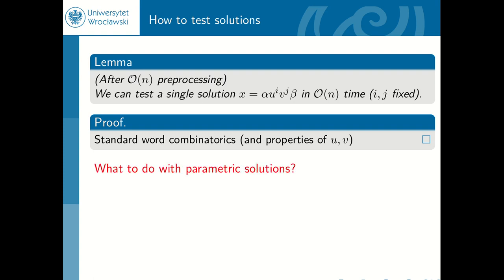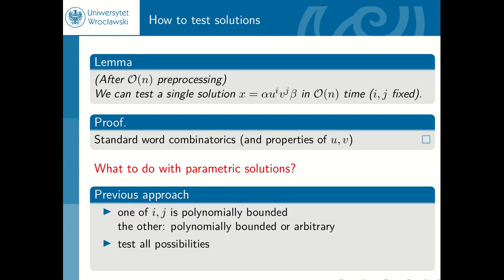Unfortunately, i and j are not fixed — there are arbitrary numbers — so we must handle those parametric solutions with unknown exponents. In previous combinatorial approaches, it was shown that one of i or j needs to be polynomially bounded, and then when one is fixed, either the other is also polynomially bounded or it works for every possible power. This gave a polynomial number of candidates which were all tested individually for every candidate solution. The main disadvantage is that those polynomial bounds depended only on the length of the equation and not on the form of the actual equation, so perhaps something more can be done by considering the specific equation in question.